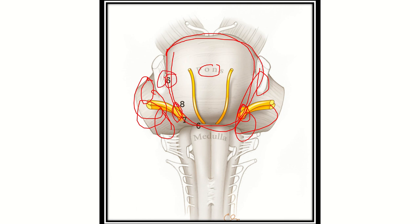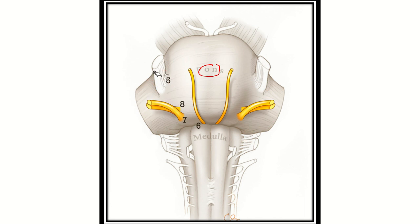These nerves are located at the level of the cerebellopontine angle. We can see the seventh cranial nerve, which is the facial nerve, and the eighth cranial nerve, which is the vestibulocochlear nerve. There is also the fifth nerve, the trigeminal nerve. So the trigeminal, facial, and vestibulocochlear nerves are all located at the cerebellopontine angle, which is the boundary between the cerebellum and the pons.